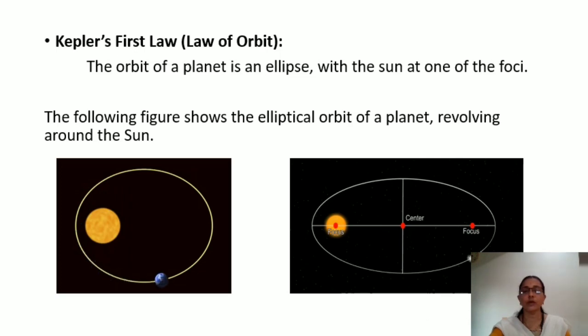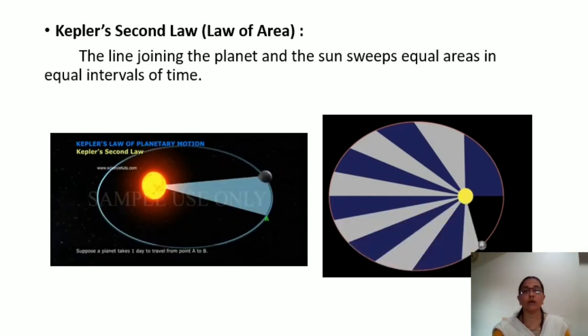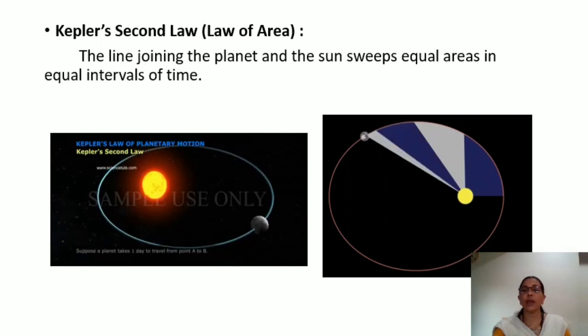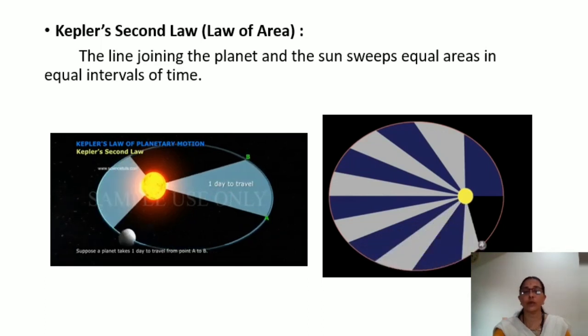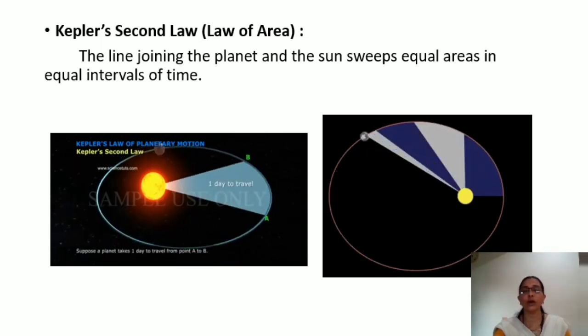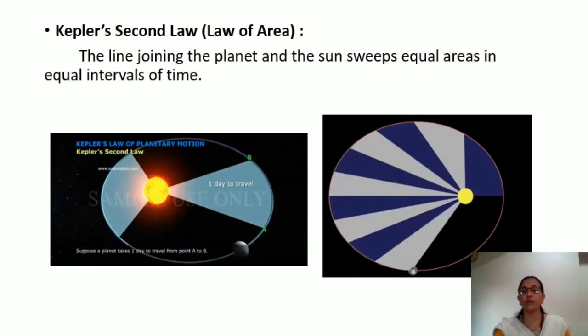So, first figure observe the sun and the earth moving around it. You will find as it goes away from the sun its movement. Kepler's second law. The line joining the planet and the sun sweeps equal areas in equal intervals of time. Observe the figure carefully.